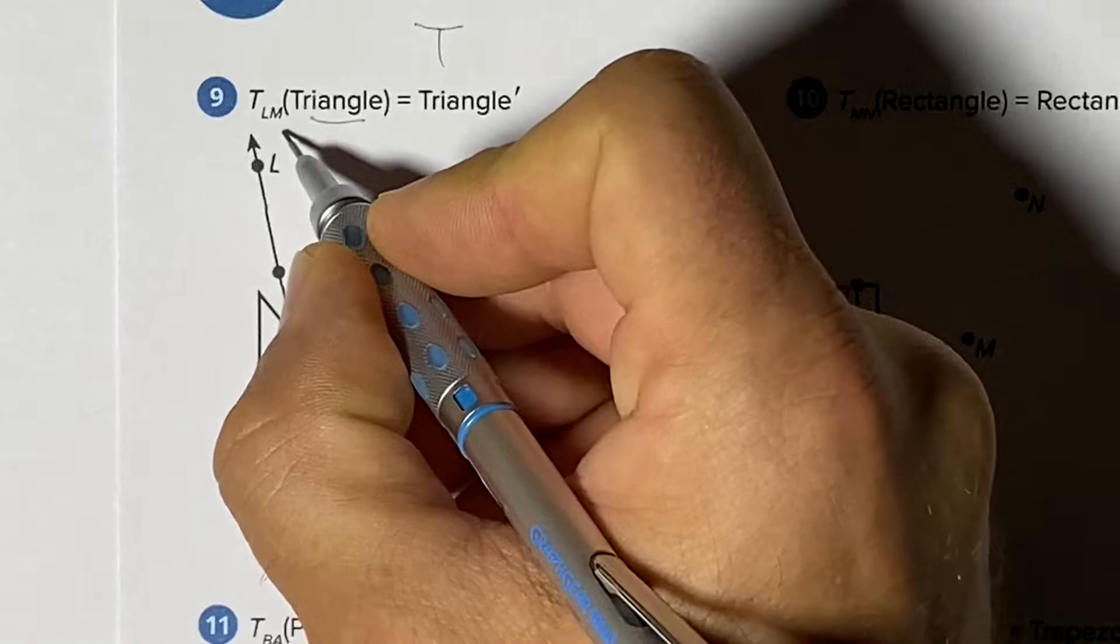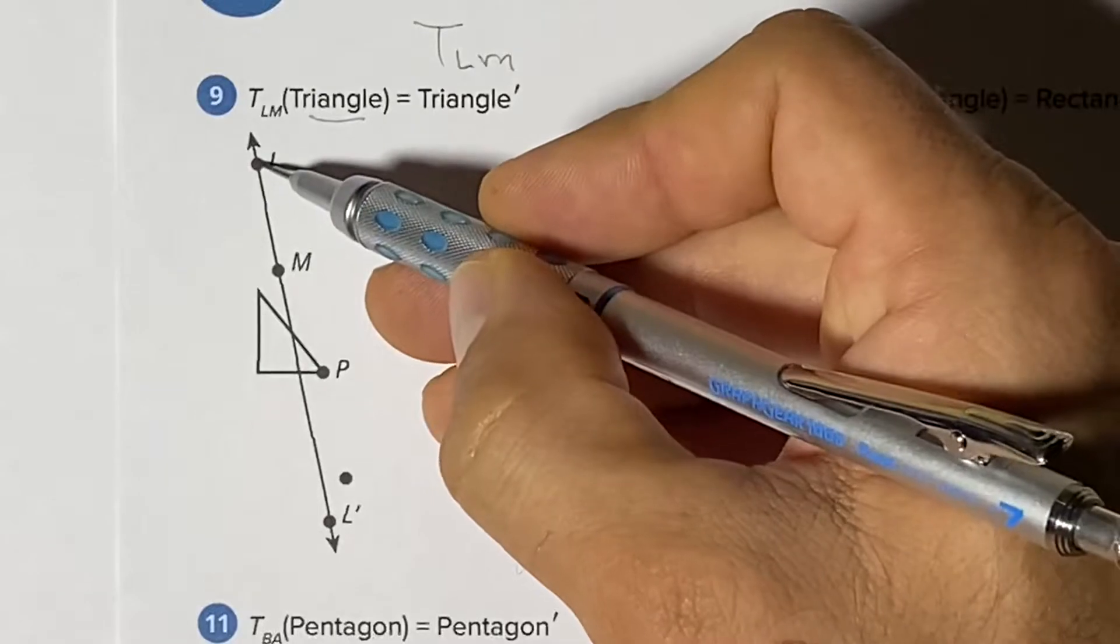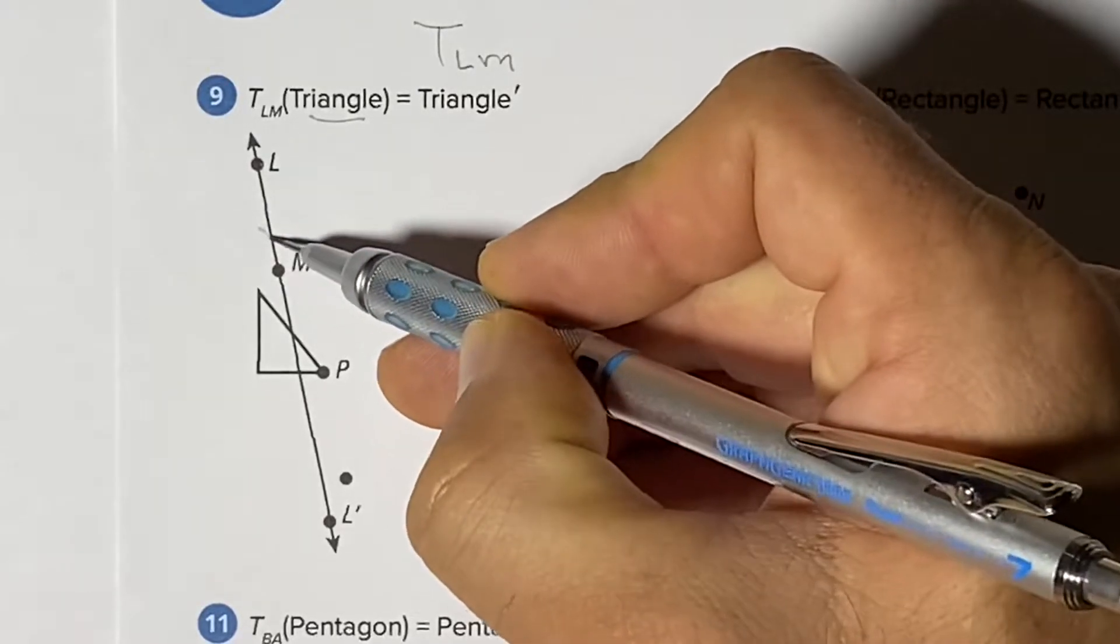And then in the corner you have an L and an M which says we're going to travel from L towards M in that direction.